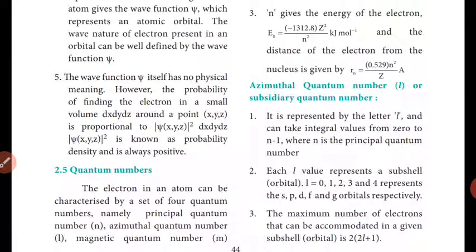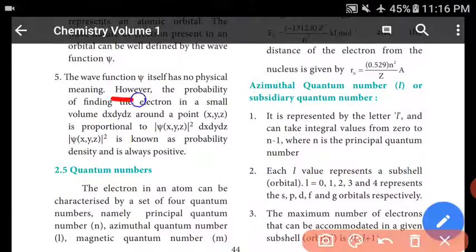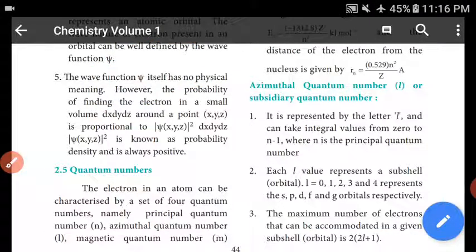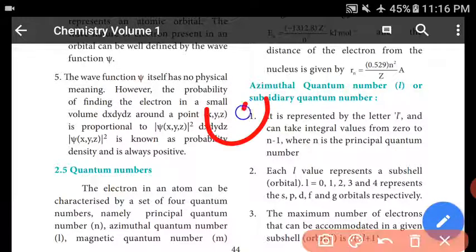The square of the wave function ψ itself has no physical meaning. However, the probability of finding the electron — the square of the wave function ψ² — does have a physical meaning.